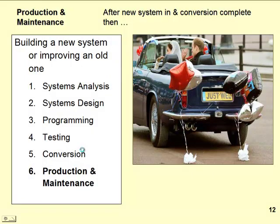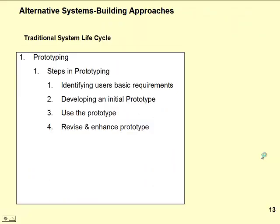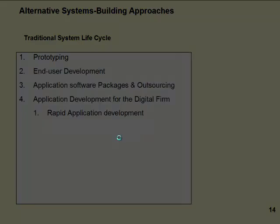Once you've done either a conversion or a new build, the next thing to worry about is production and maintenance. After a new system is in, you've got to look at how it works. There is also an alternative system building approach: prototyping. The steps in prototyping are identifying the user's basic requirements, developing an initial prototype, using this prototype, and then revising and enhancing it. This is not too different from the previous steps.